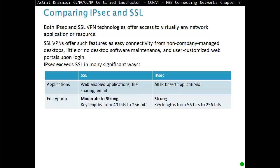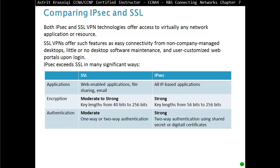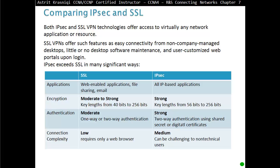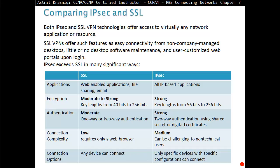Encryption in SSL is moderate to strong, with key lengths from 40 to 256 bits; in IPSec it is strong only, with key lengths from 56 to 256 bits. Authentication in SSL is moderate, with one-way or two-way authentication; in IPSec it is stronger two-way authentication using shared secret keys or digital certificates. Connection complexity is very low for SSL — only a web browser is required — while IPSec is medium, as it can be challenging for non-technical users who must open and configure a client application. For connection options, any device can connect with SSL, while with IPSec only specific devices with a specific configuration can connect.